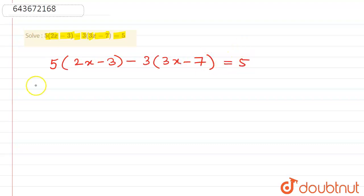This implies that 5 times 2 is 10, so 10x, minus 5 times 3 is 15. Then 3 times 3 is 9, so 9x, and minus times minus gives plus, so 3 times 7 is 21. This gives us 10x - 15 - 9x + 21 = 5.